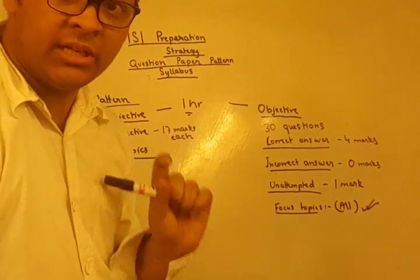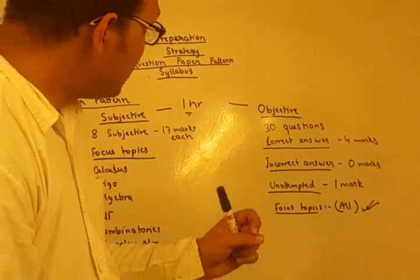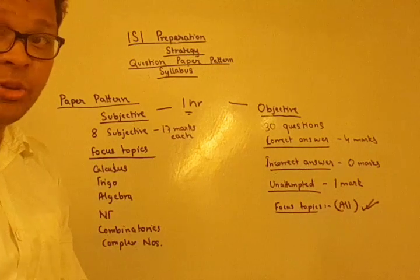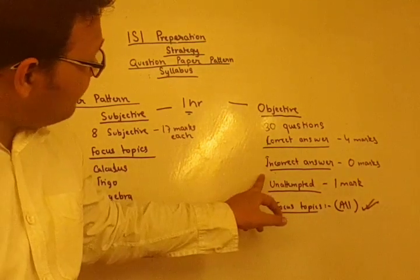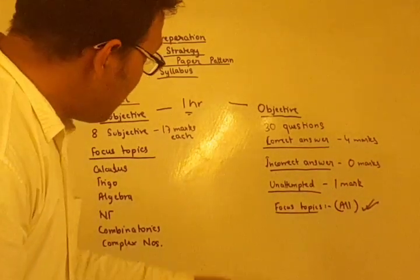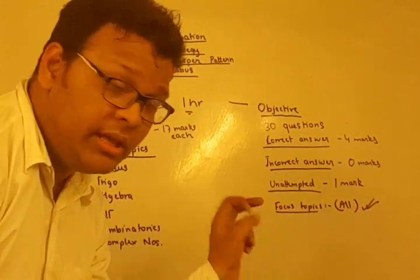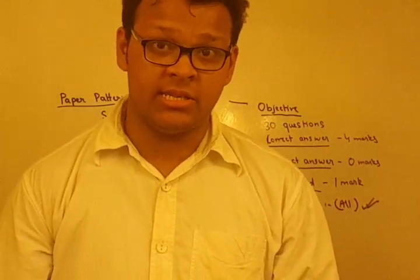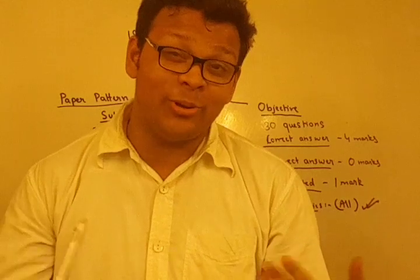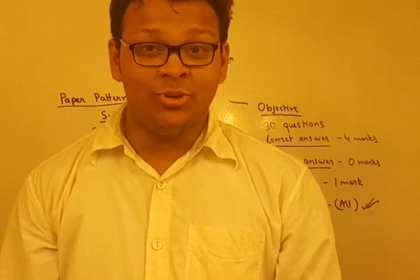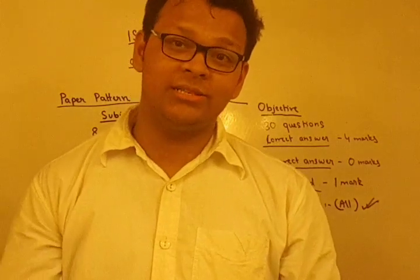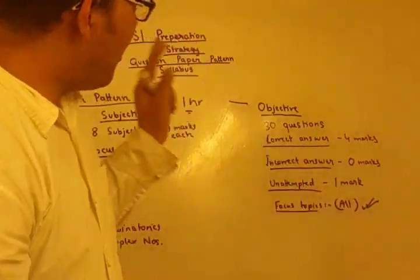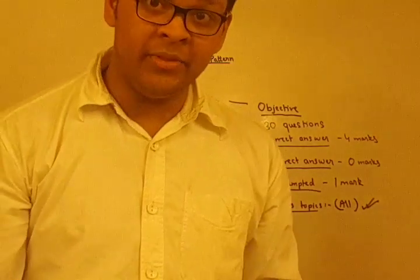In the objective paper, you get 30 questions. A correct answer yields 4 marks. For every incorrect answer you get zero marks, and for every unattempted question you get 1 mark. So even before knowing any question, you are already carrying 30 marks. The total marks for the objective paper is 120.